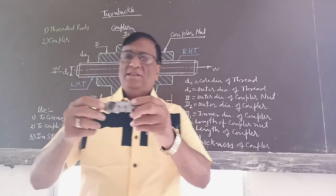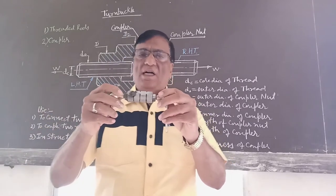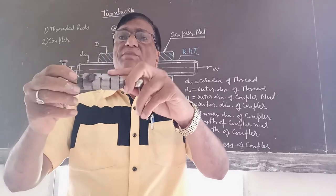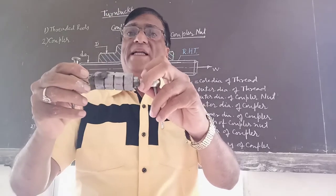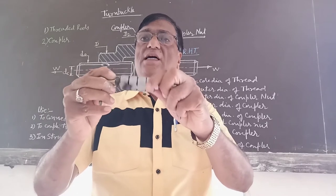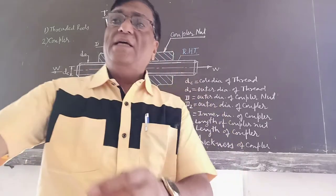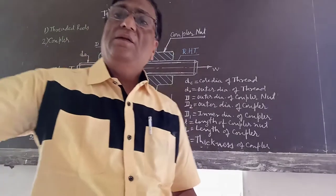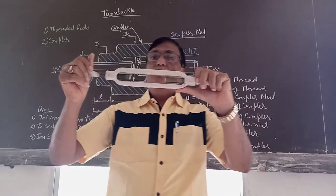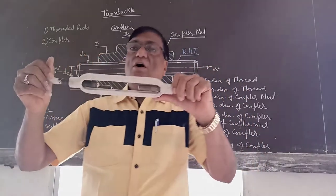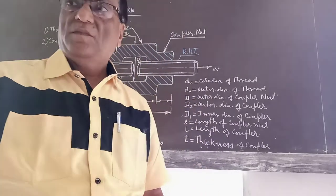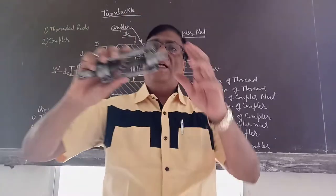This is one type of turn buckle. Here, a hexagonal shape is given to attach the spanner. With the help of the spanner, you can rotate this coupler. Here is another type of turn buckle, used to join two cables or two tie rods. This is another type of turn buckle.